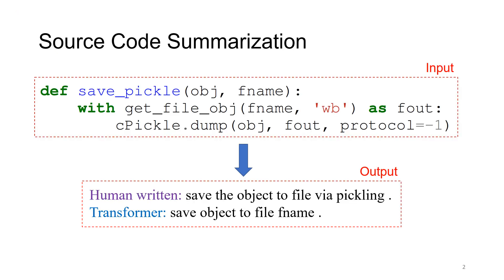Source Code Summarization refers to the task of creating human readable summaries that describe the functionality of a program. With the progress of natural language generation using neural sequence-to-sequence learning, recent approaches in literature frame code summarization as translating a piece of source code into a short natural language description. For example, given a Python source code snippet, a code summarization model should be able to generate a summary similar to the human written summary.